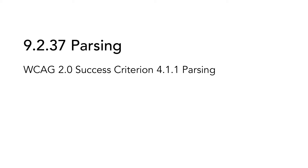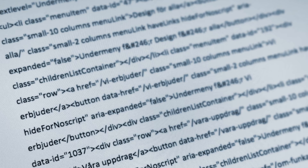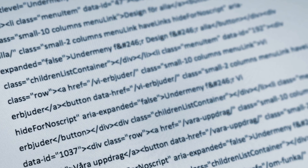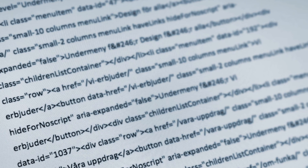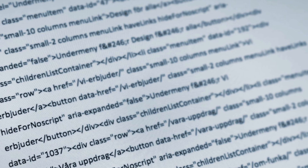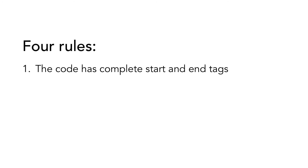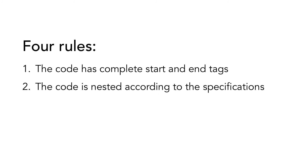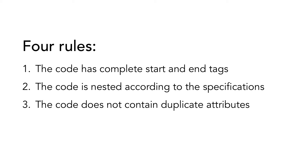9.2.37 Parsing is based on WCAG 2.0 Success Criterion 4.1.1 Parsing. All code that you use should be correct. This decreases the risk for problems when user agents and assistive technology are trying to interpret the code. If you need to make exceptions, it is important that the code at least follows these four rules: it should have complete start and end tags, it should be nested according to the specifications, it should not contain duplicate attributes, and any ID values should be unique.